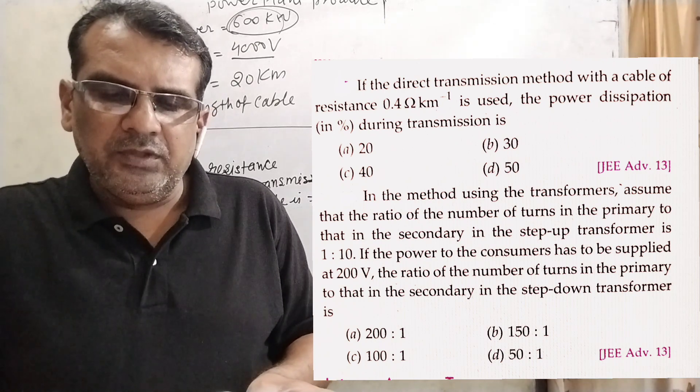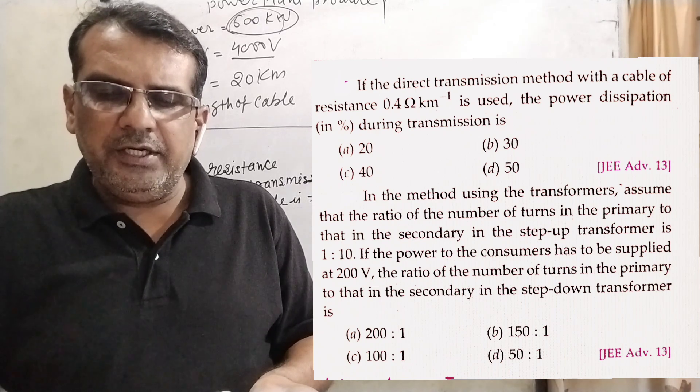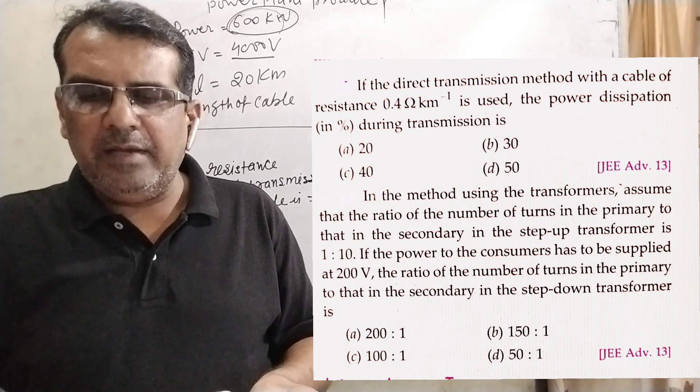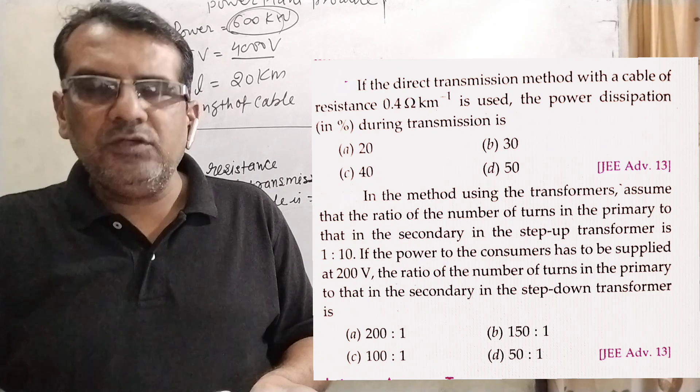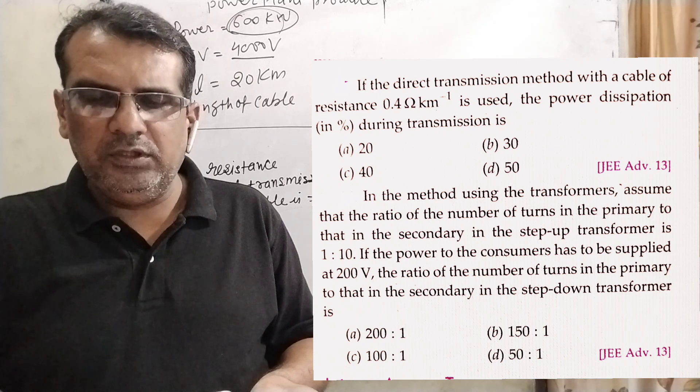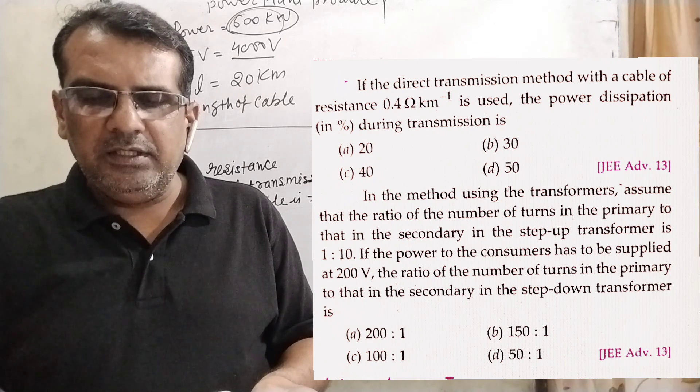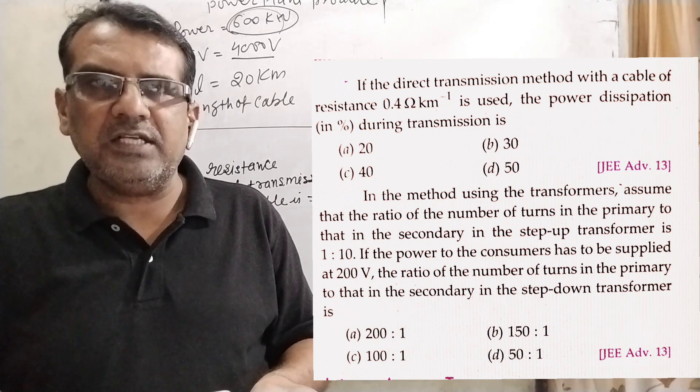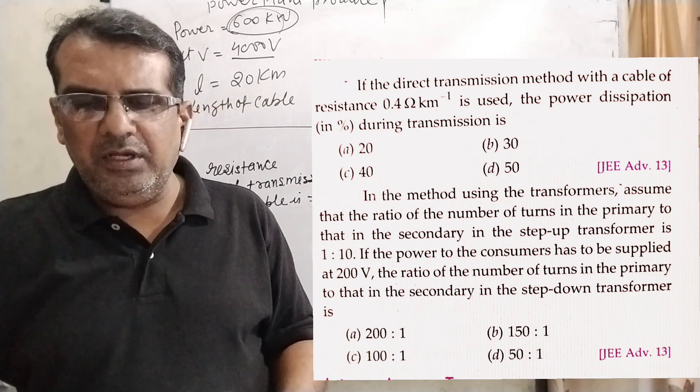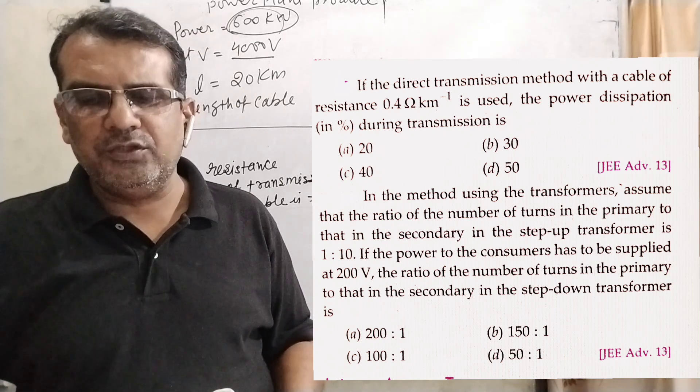In the method using the transformers, assume that the ratio of the number of turns in the primary to that in the secondary in the step up transformer is 1 is to 10. If the power to the consumers has to be supplied at 200 volt, the ratio of the numbers of turns in the primary to that in the secondary in step down transformer is: A. 200:1, B. 150:1, C. 100:1, D. 50:1.